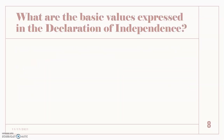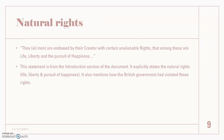A basic question you should ask yourself at this point is: what are some basic values expressed in the Declaration of Independence? One of the things mentioned was natural rights. This phrase is taken directly from the Declaration of Independence: 'All men are endowed by their Creator with certain unalienable rights, that among these are life, liberty, and the pursuit of happiness.' This statement is from the introduction section of the document.